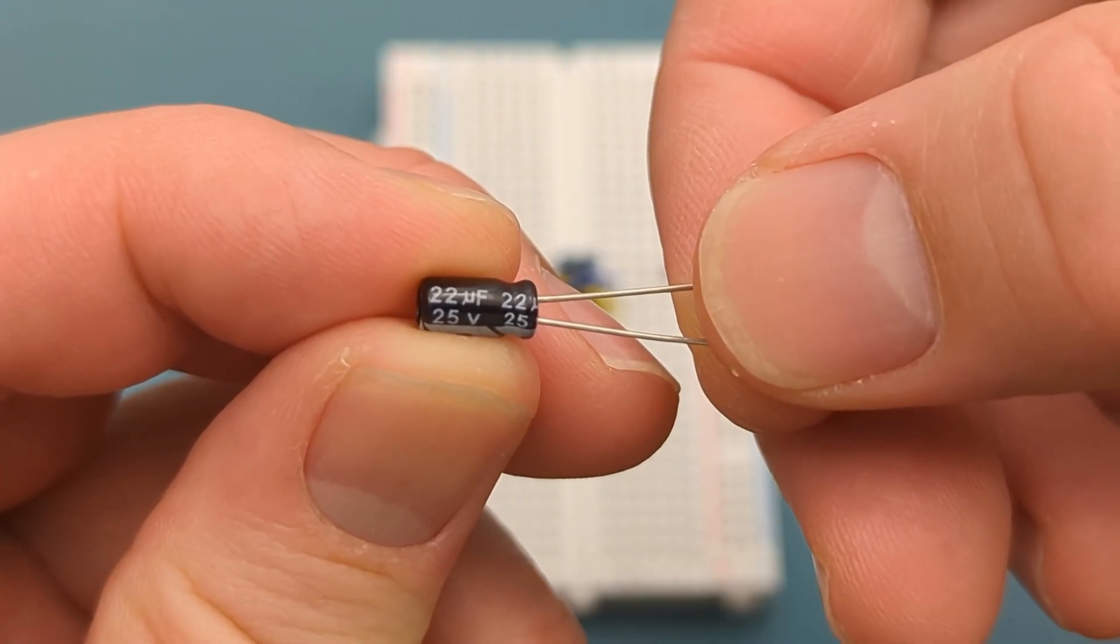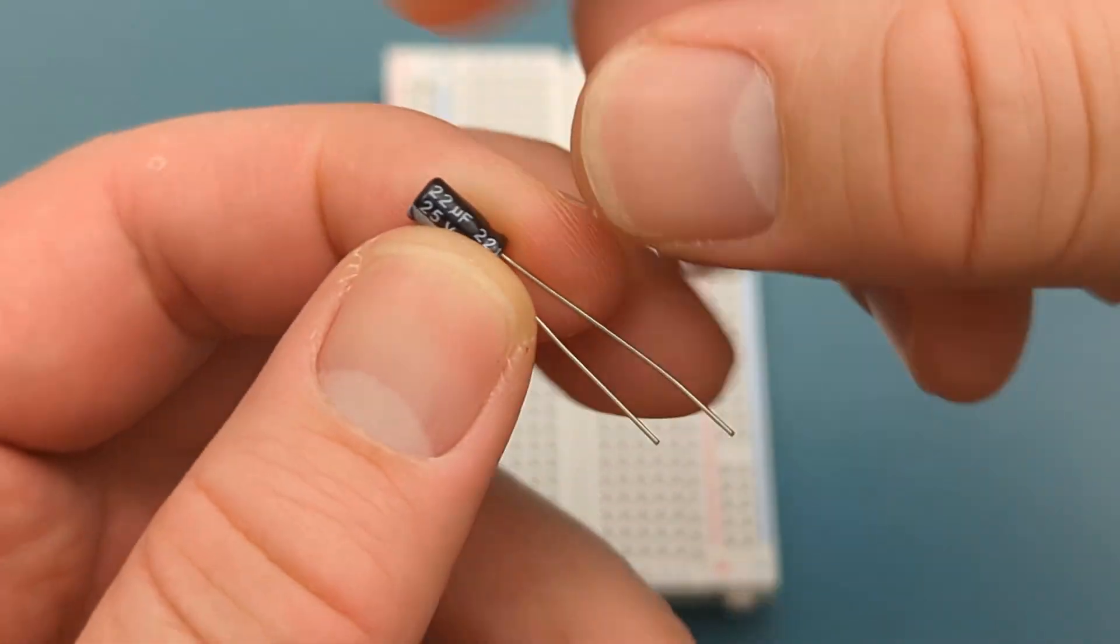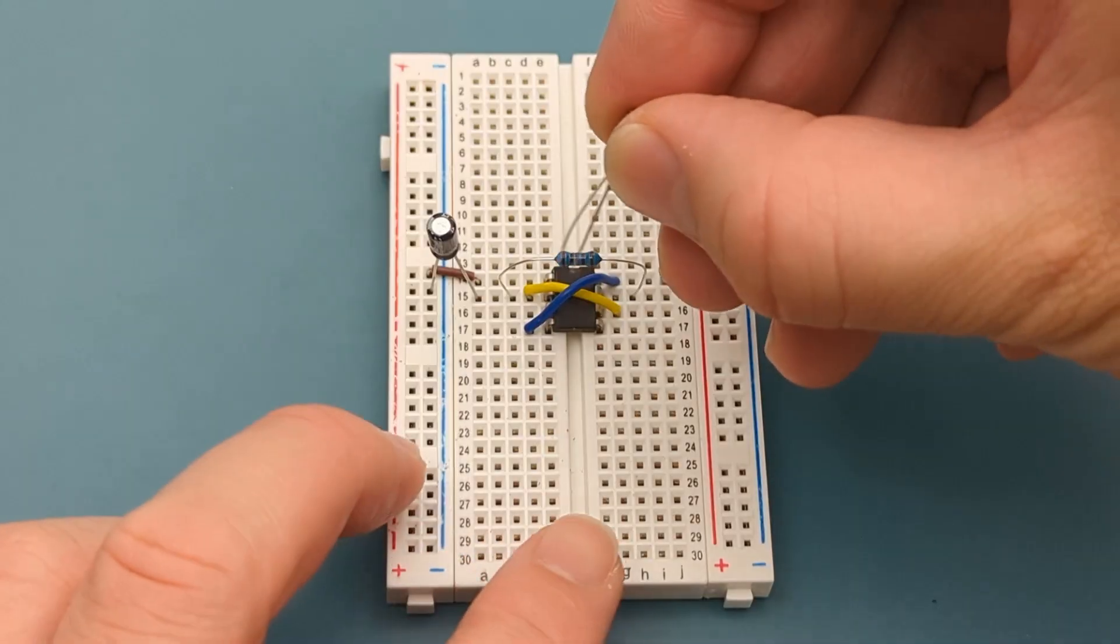Insert a 22 microfarad capacitor into pin 3 or output and a few rows below the 555 timer. The positive terminal is in pin 3.